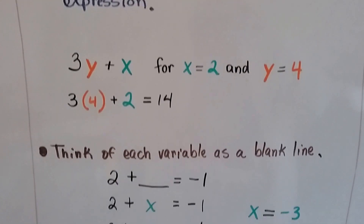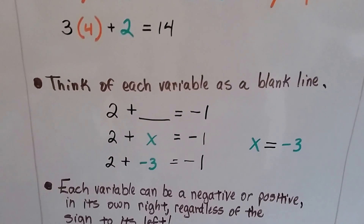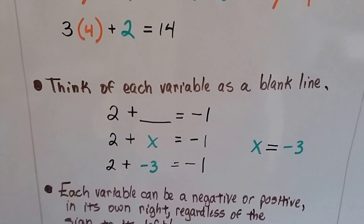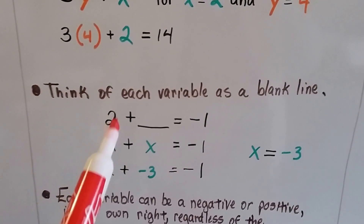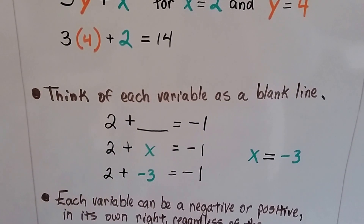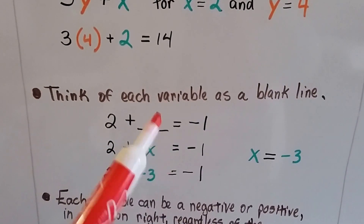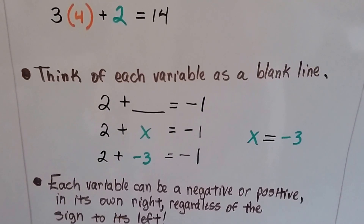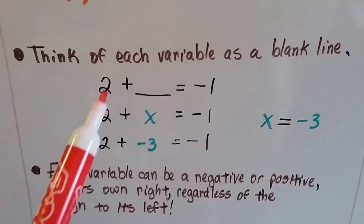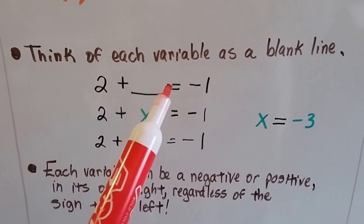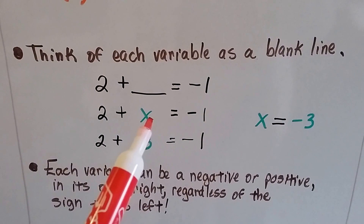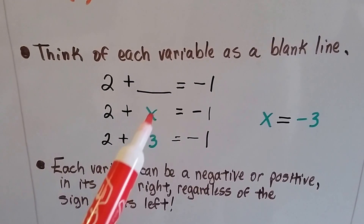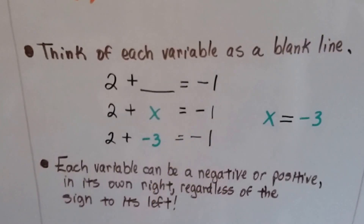Now it turned into an equation. Think of each variable as a blank line — I talked about this in Algebra 1. Back in grade school, you saw '2 plus blank equals 5' and you filled in the blank. Well, think of each variable as an actual blank line. So 2 plus something equals negative 1 — we could say x. We don't know what that amount is, so we say 2 plus x equals negative 1.